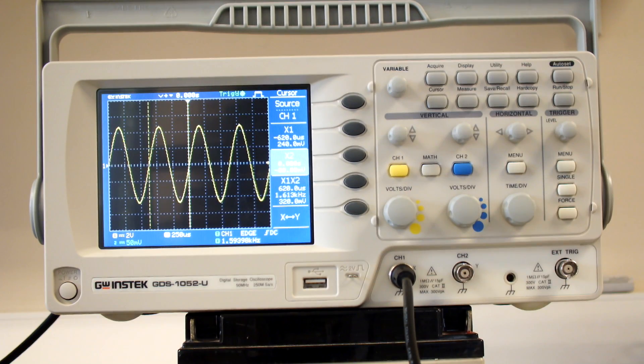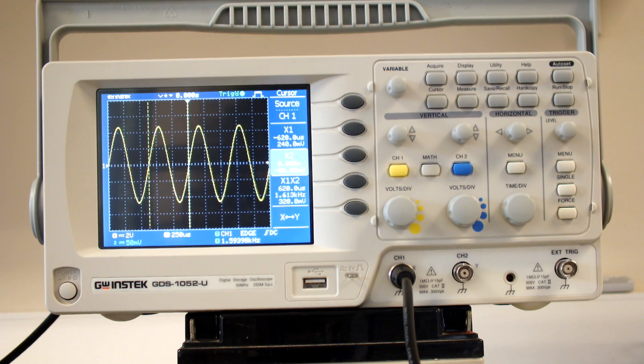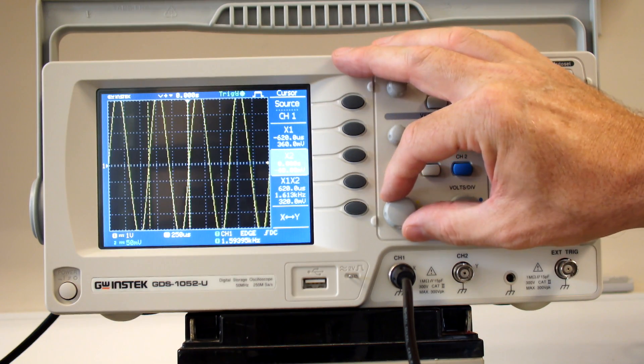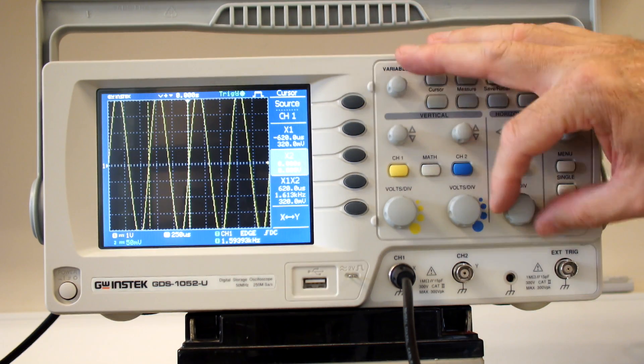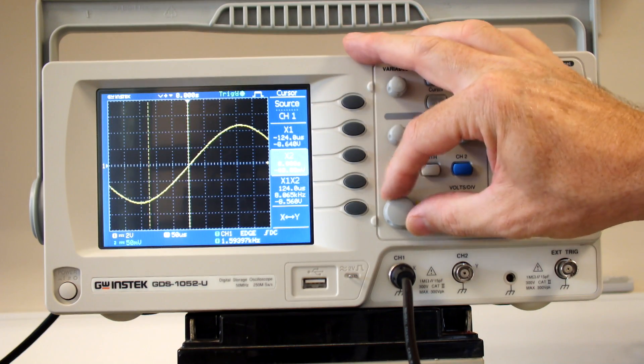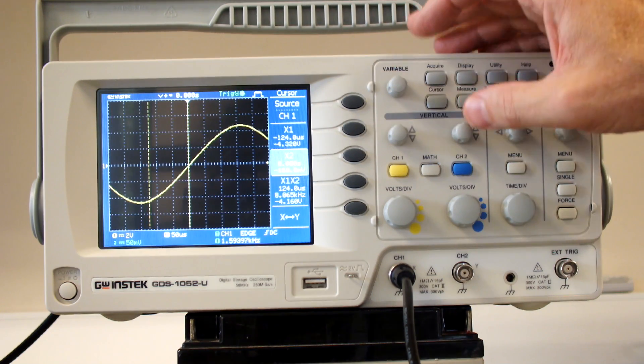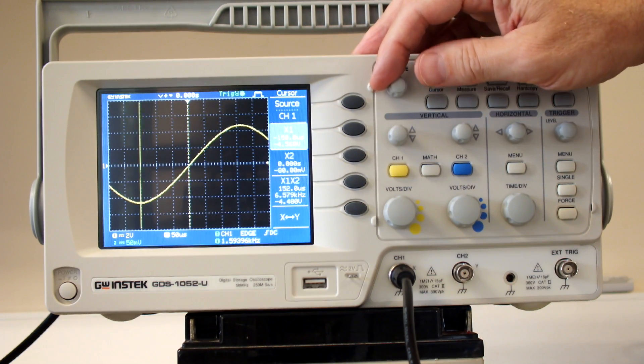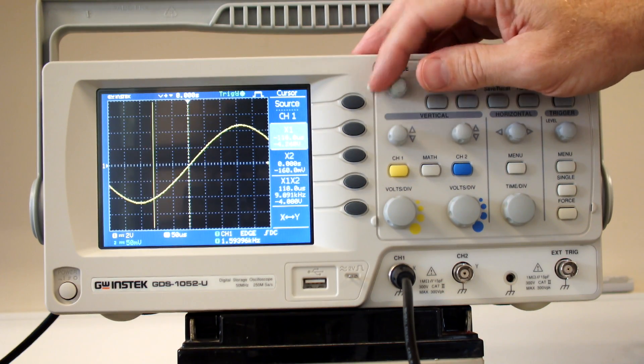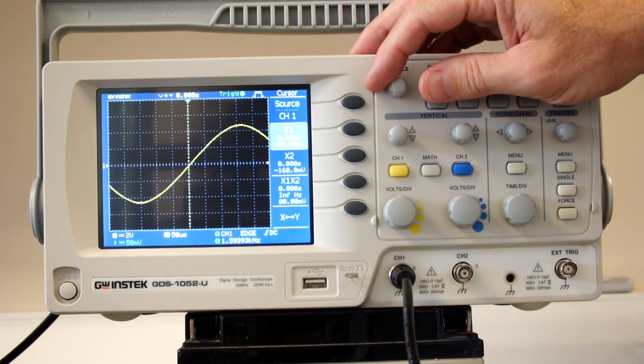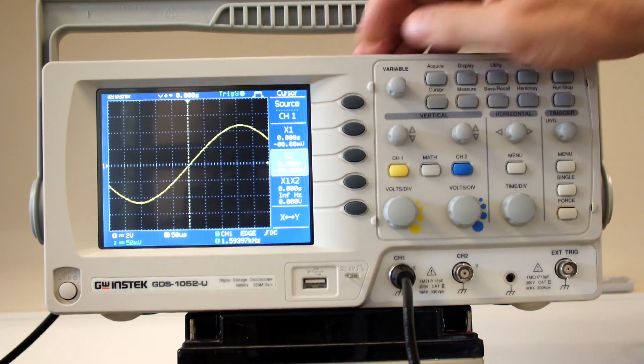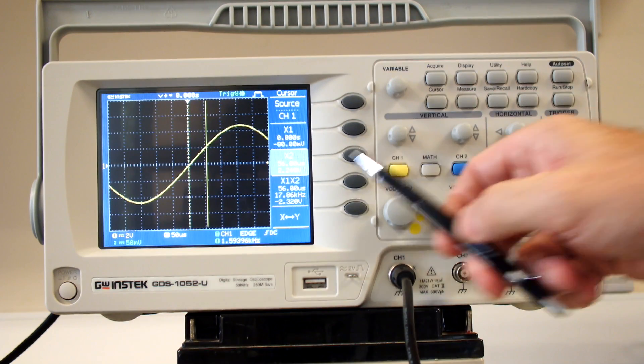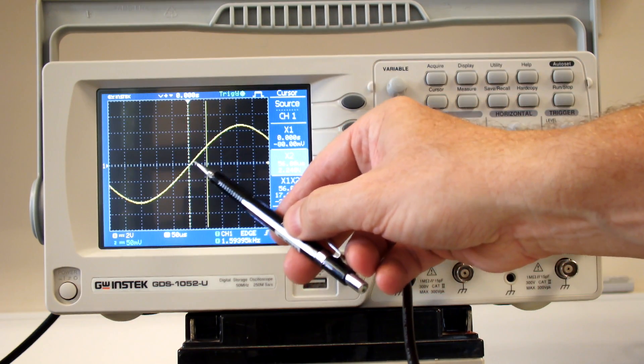What can be useful here is if I've got a transient type response, I can move one cursor to a reference point, say where it crosses a line, and then I can move this along. This is telling me the relative time between this point and this point.